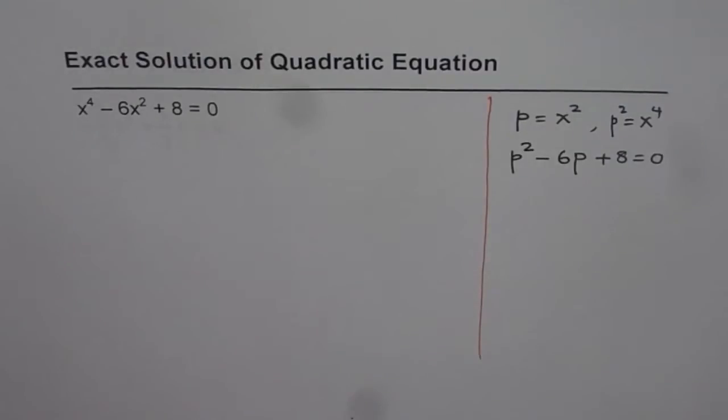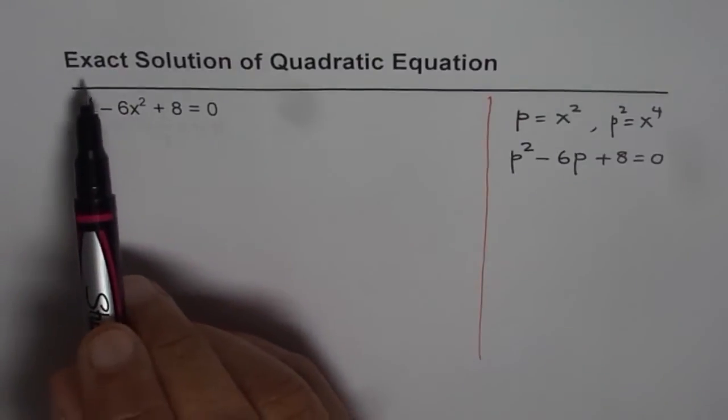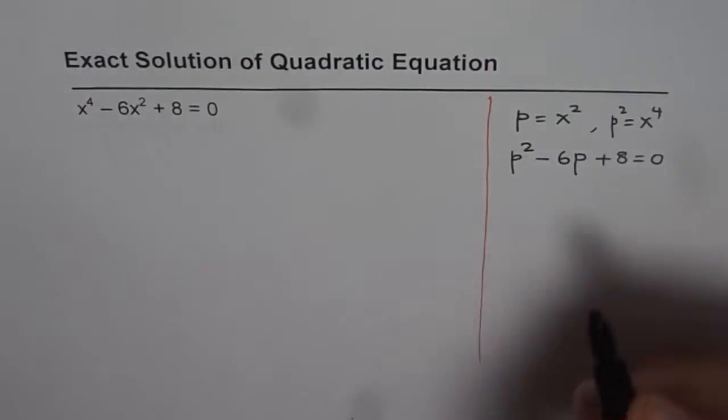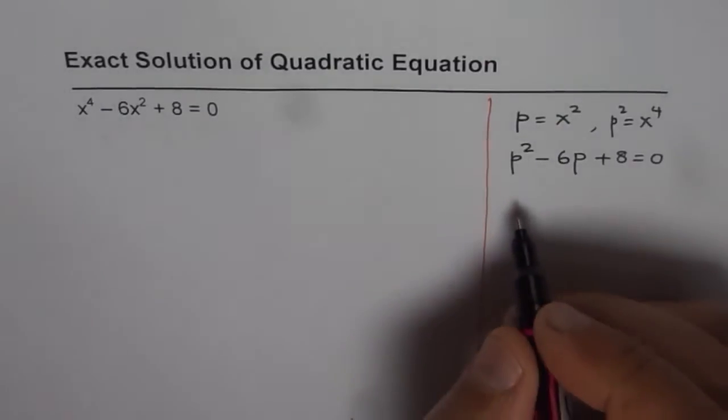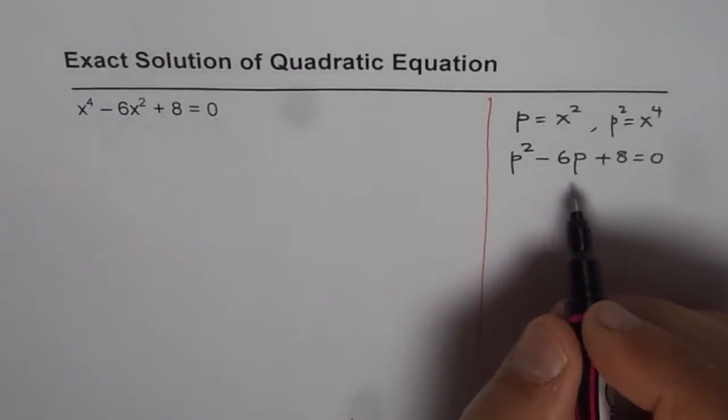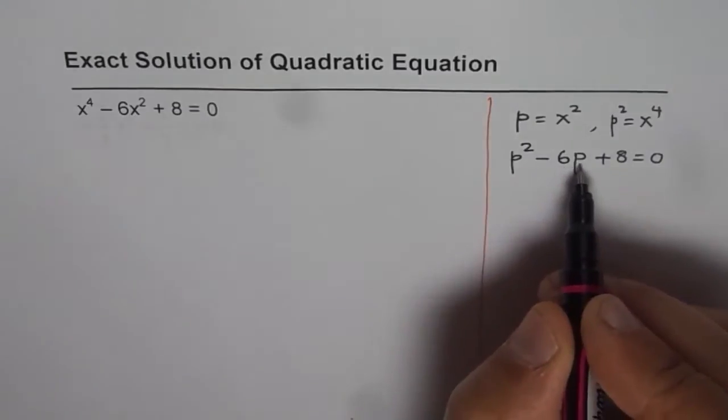The second part of this question is, if you look at the question, it says exact solution of quadratic equation. Whenever there is exact solution, that means we have to use the quadratic formula. In this case, the variable is p.